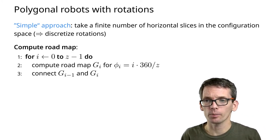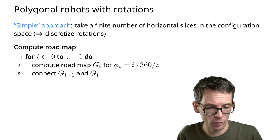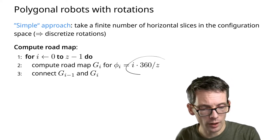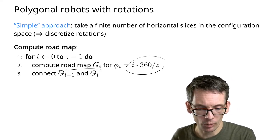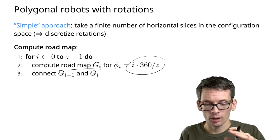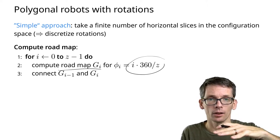Instead of continuously rotating the robot, we have a discretized space. If we now want to have the roadmap, what we can do is compute for each slice.